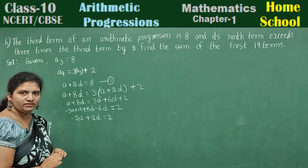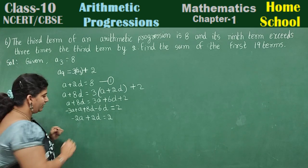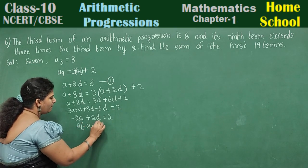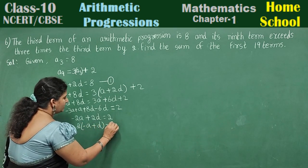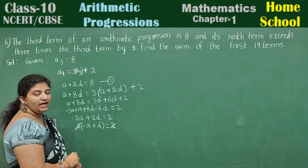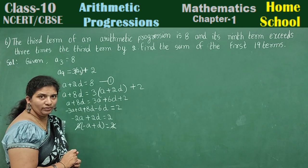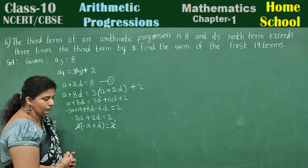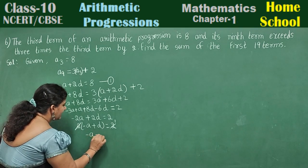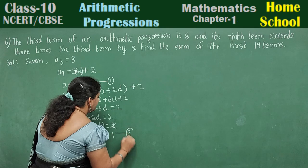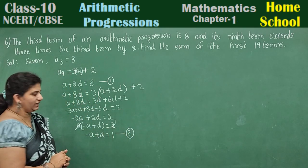Bring A and D this side. Minus 3A plus A plus 8D minus 6D is equal to 2. Minus 3A plus A will be minus 2A plus 8D minus 6D will be 2D is equal to 2. Is there anything common? Yes, I can take out 2 common. Minus A plus D is equal to 1. Mark this second equation.